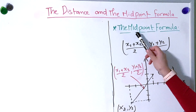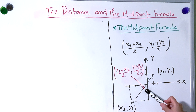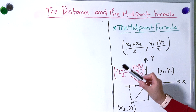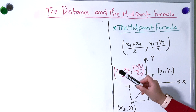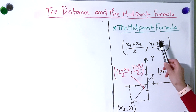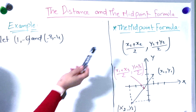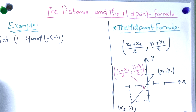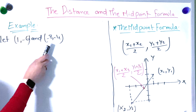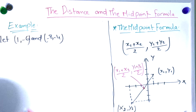Now let's move to the midpoint formula. The midpoint is the center of the line segment. To find the midpoint we find the average of x1 and x2, and the average of y1 and y2. For our example, the first point is (1, −6) and the second point is (−8, −4). Let's graph them first.